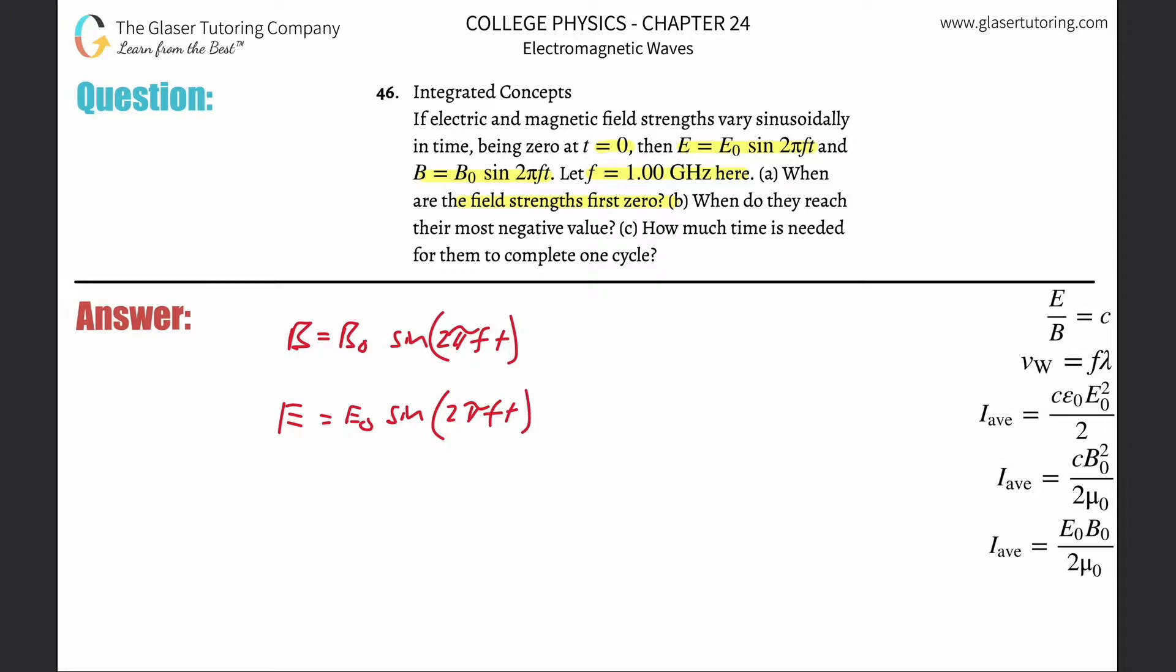So just think about this, if t is zero, then this whole thing in the sine function goes to zero and sine of zero is zero. And therefore this whole thing, everything just goes to zero. So the answer for letter a is just t is equal to zero.